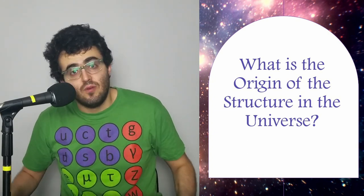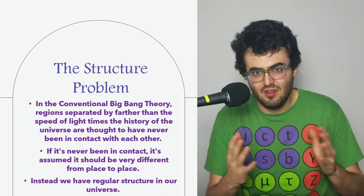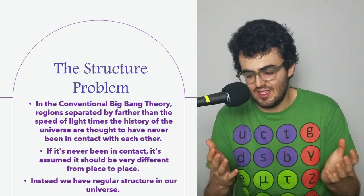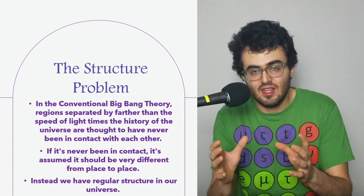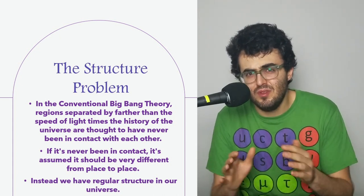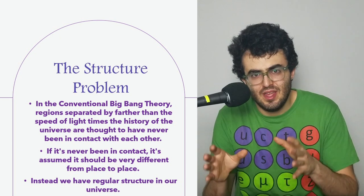Let's tackle all of that right now. One of the limitations of the Big Bang Theory is that it can't explain the structure of the universe. In the conventional Big Bang Theory, the universe started with a bunch of spots that were separate from each other that just started expanding. But if those spots were not in contact with each other, then it's presumed that they would be wildly different from place to place.